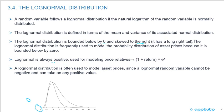The lognormal distribution is always positive, and that's why it's used to model asset prices. Have you ever heard of an asset that has a negative price? No. That's why the lognormal distribution is often used to model asset prices — since a lognormal random variable cannot be negative and can take on any positive value. The lognormal distribution is frequently used to model the probability distribution of asset prices because it is bounded below by zero.